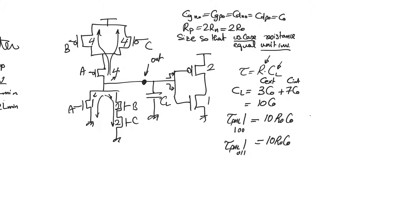When the input is all 1s (1,1,1), transistors A and BC are active simultaneously. A alone gives W/L = 1, and BC in series gives W/L = 1; in parallel they give equivalent W/L = 2, so resistance = R0/2, and the time constant is 5R0C0. As we can see, the time constant is never worse than 10R0C0 — which is exactly what we designed for, since resistance never exceeds R0.